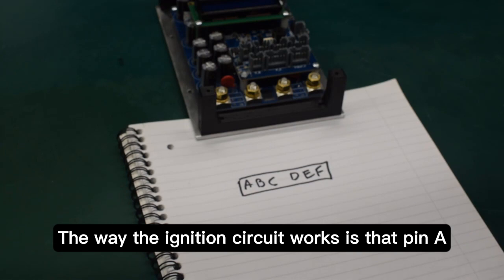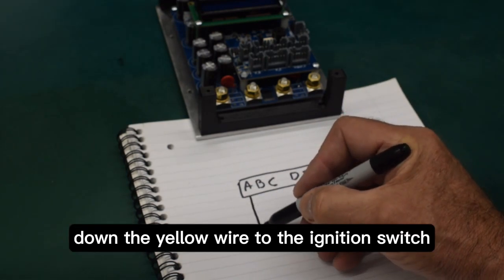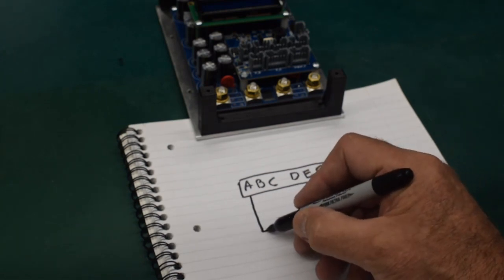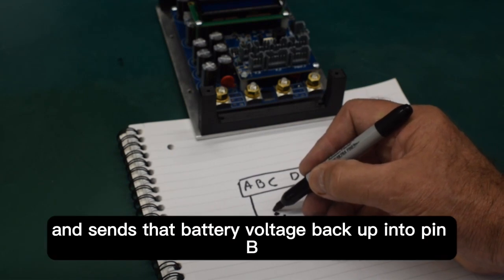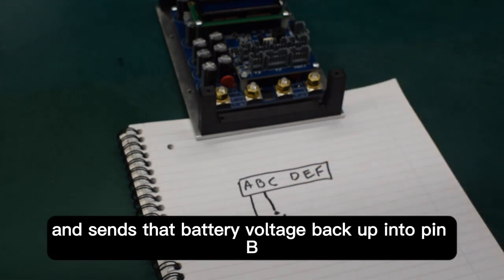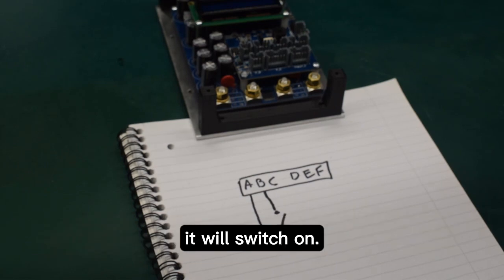The way the ignition circuit works is that pin A sends battery voltage down the yellow wire to the ignition switch. The ignition switch turns it around and sends that battery voltage back up into pin B. As soon as the Pro 160 detects that voltage on pin B it will switch on.